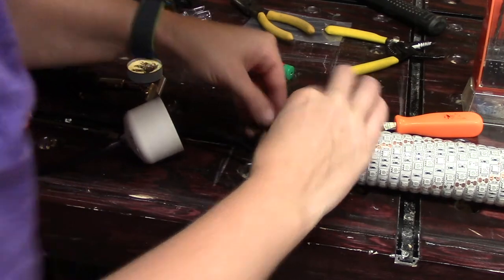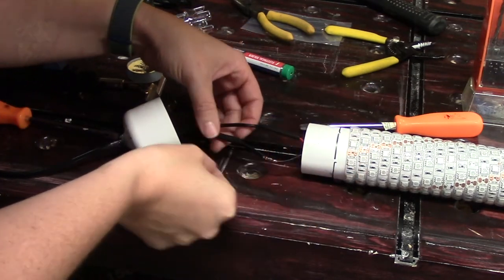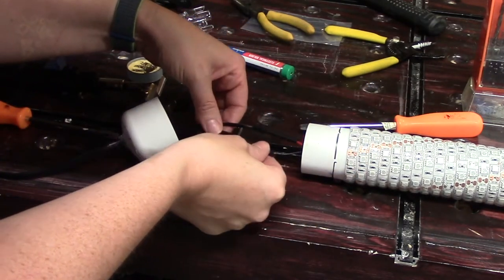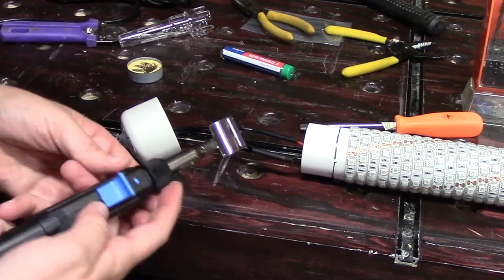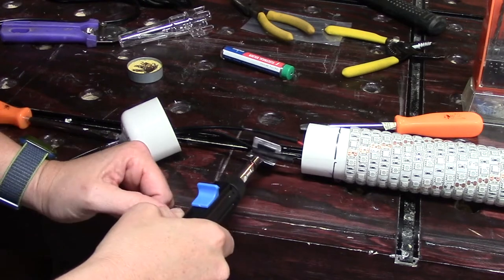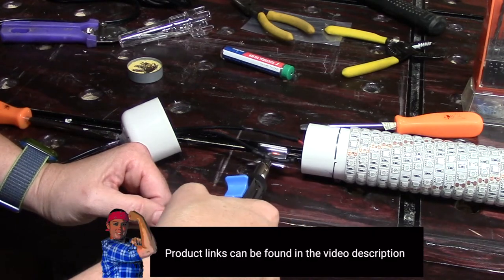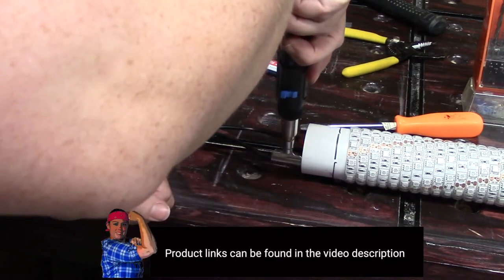Once it cooled I placed the heat shrink tubing over the two ends of the wires. The butane soldering kit that I purchased also came with a tip designed for heat shrinking tubing. If you are interested in this soldering kit, check out the video description below for a link.